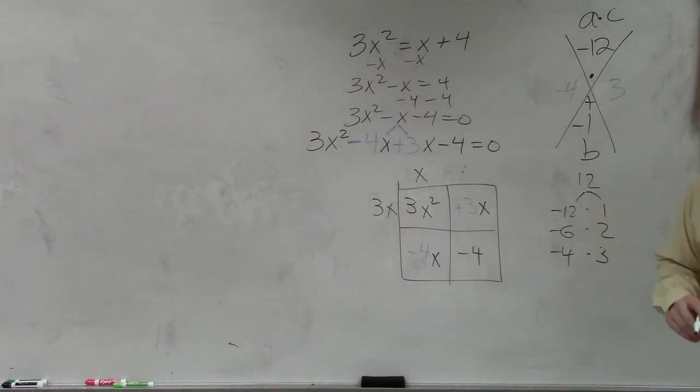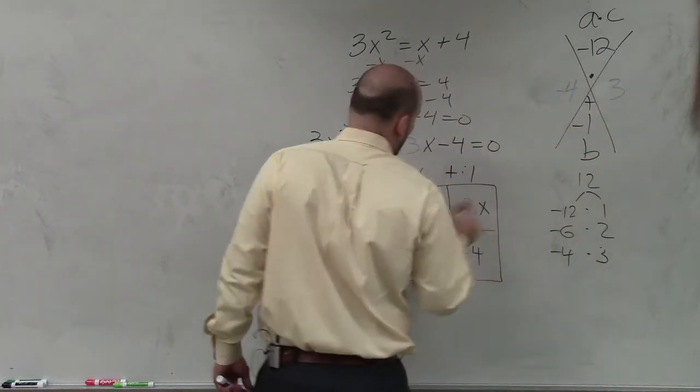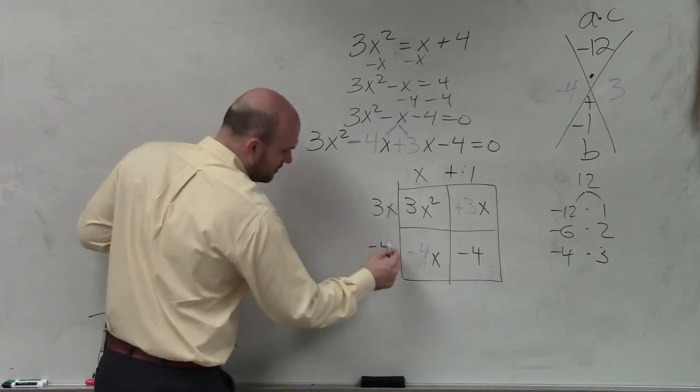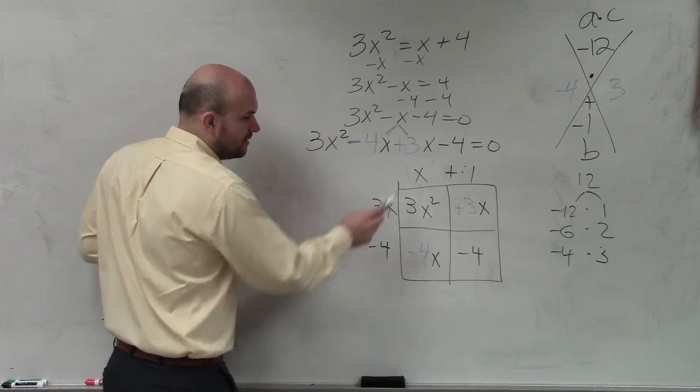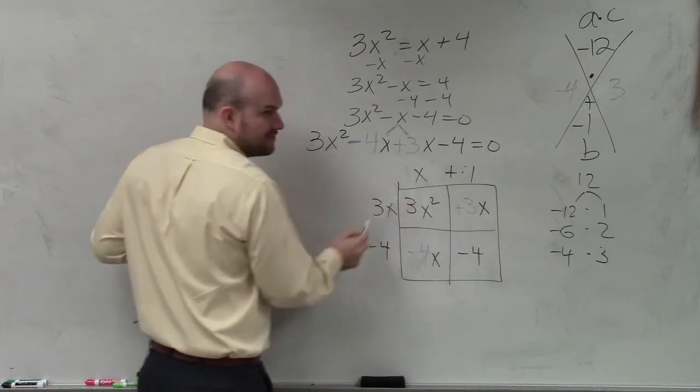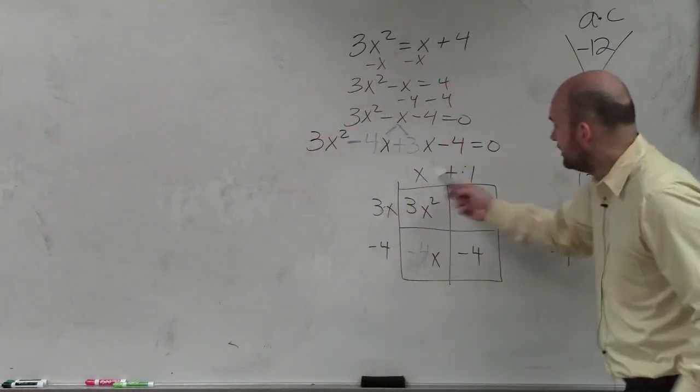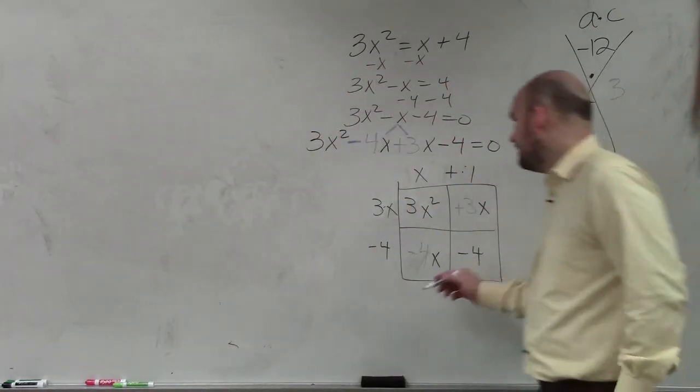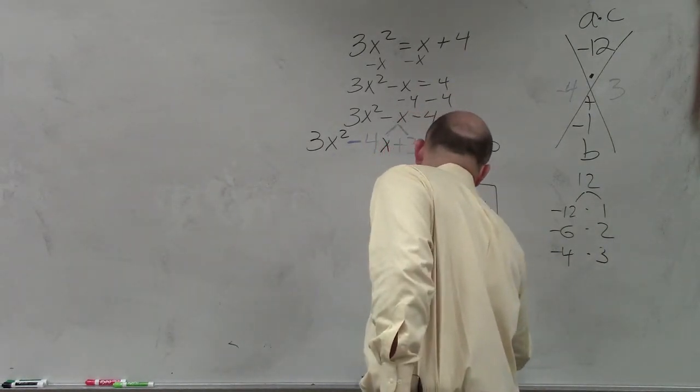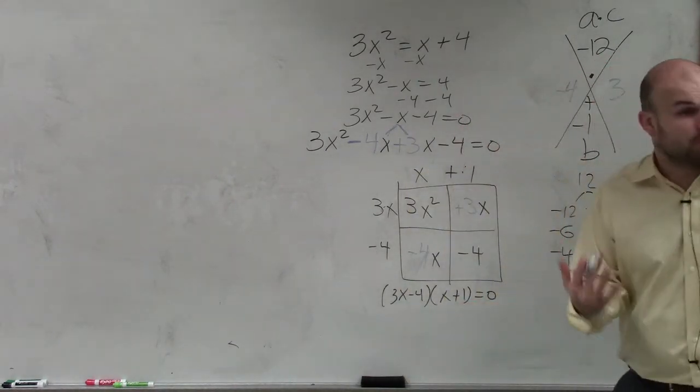OK. 3x times what gives you 3x? I'm sorry, 3x times 1. And then x times what gives you negative 4x? Negative 4. Negative 4. x times negative 4 gives you negative 4x. 3x times 1 gives you 3x. 3x times x gives you 3x². And negative 4 times 1 gives you negative 4. Therefore, I can write (3x - 4)(x + 1) = 0. That's one way.